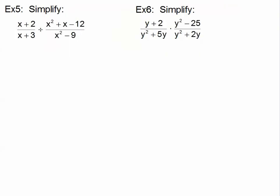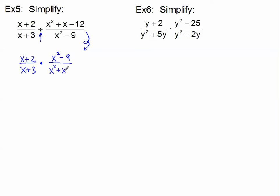Let's look at our first example. We've got a division problem — that's the first thing I noticed. It's very difficult to divide fractions, so I always change them to multiply. The first fraction, x plus 2 over x plus 3, stays the same. The division changes to a multiply, and I take the reciprocal of the second fraction: x squared minus 9 goes to the numerator and x squared plus x minus 12 goes to the denominator.